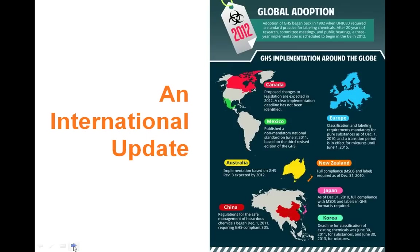Other countries are moving forward with GHS adoption as well. Canada is moving forward with their GHS implementation — consultation with stakeholders is currently ongoing, and GHS implementation will be at least two years once the legislative process begins. They are planning a transition period much like the one OSHA is proposing — a five to six year total transition plan. It appears Canada will follow the U.S. lead, approximately two to three years after our final implementation day.